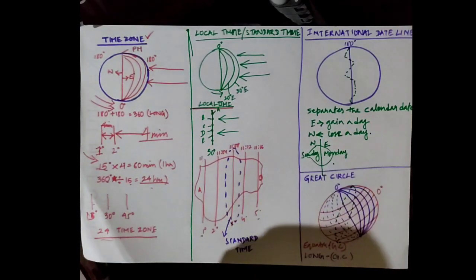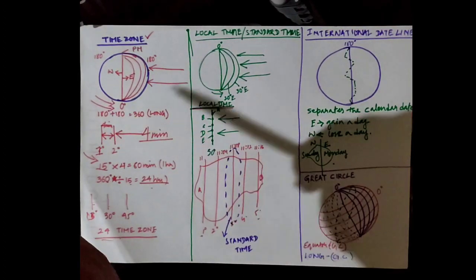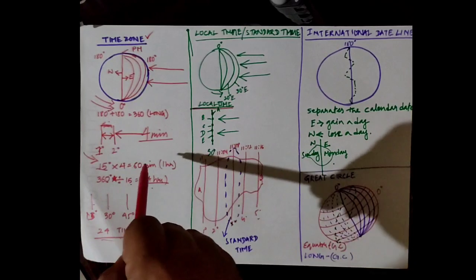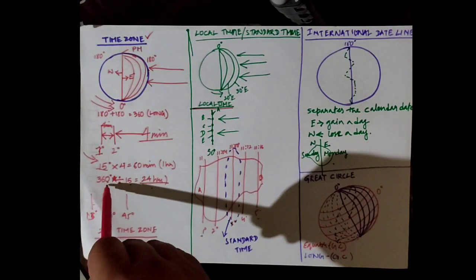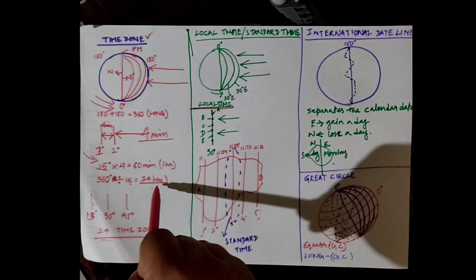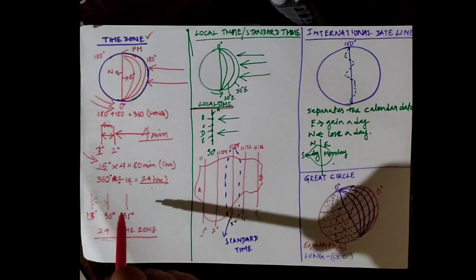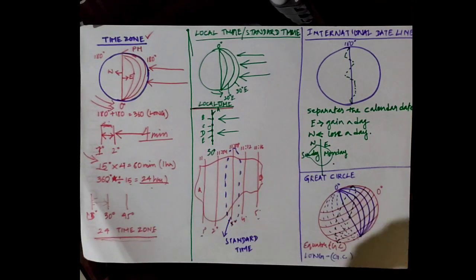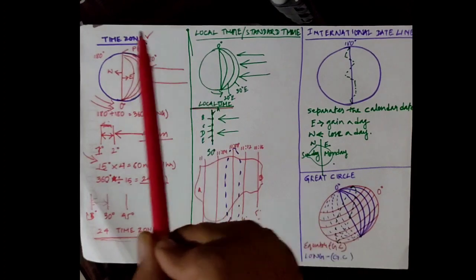The time taken to travel from one meridian to another meridian is 4 minutes. In one hour, 15 degrees of longitudes are covered. There are altogether 360 longitudes, and if you divide 360 by 15, the time taken is 24 hours. So in every 15-degree interval of longitudes, the time difference is one hour, which means there are 24 time zones — each 15-degree longitude forms one time zone.